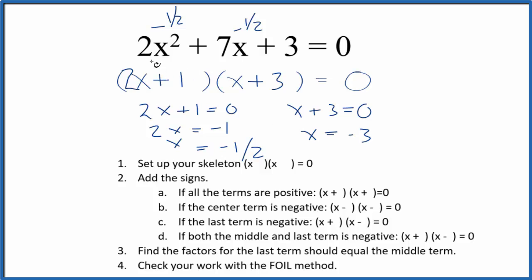This is Dr. B factoring the equation 2x squared plus 7x plus 3 equals 0. Thanks for watching.